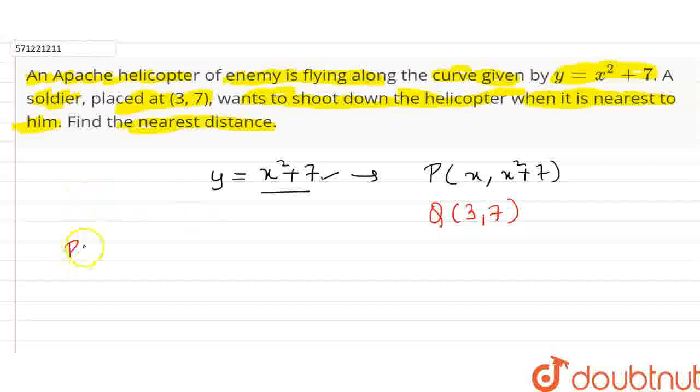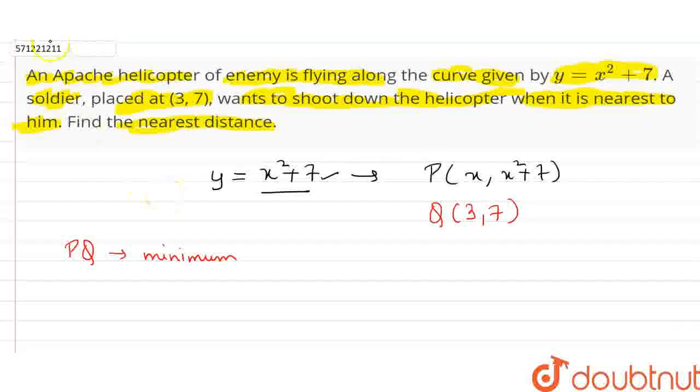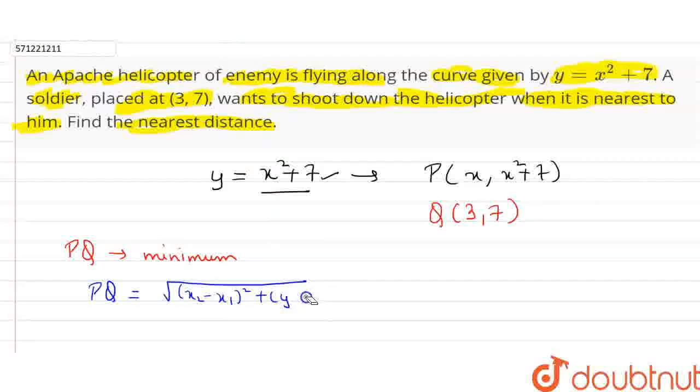So we have to find the distance PQ such that the distance between PQ is shortest, means minimum. So for maximum minimum we have to differentiate this PQ. So let's first find the value of PQ. The distance between two points is under root (x2 minus x1) whole square plus (y2 minus y1) whole square.